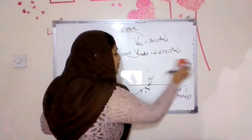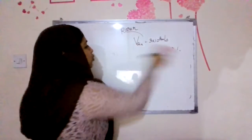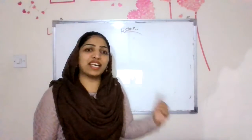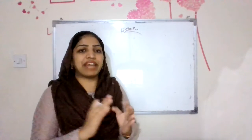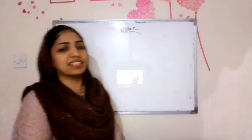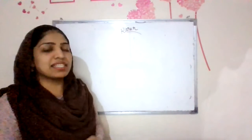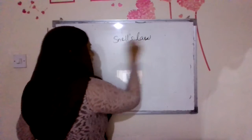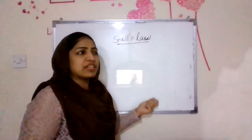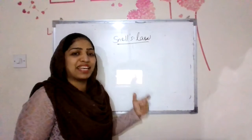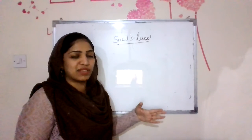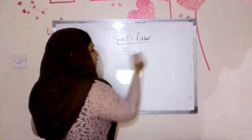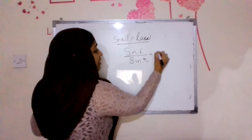Laws of refraction. There are two laws. The first law states that the incident ray, the refracted ray, and the normal at the point of incidence all lie in the same plane. The second law is Snell's law of refraction: the ratio of sine of angle of incidence to the sine of angle of refraction is a constant. Mathematically, sine i divided by sine r is equal to a constant.